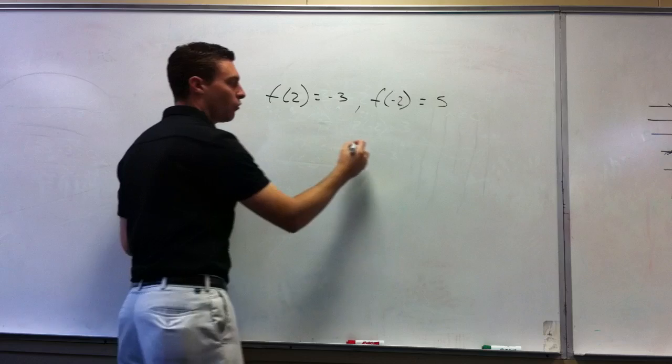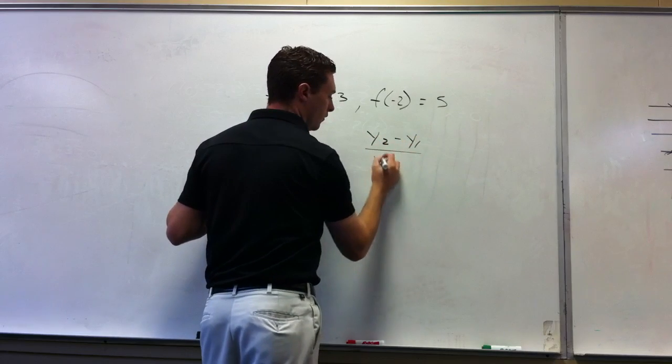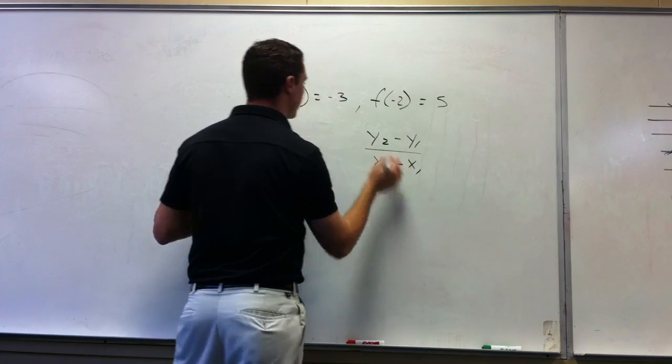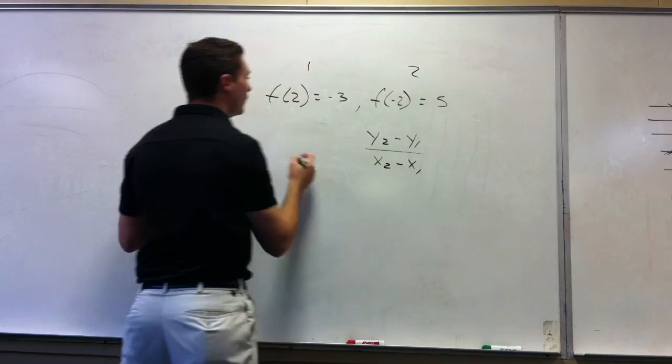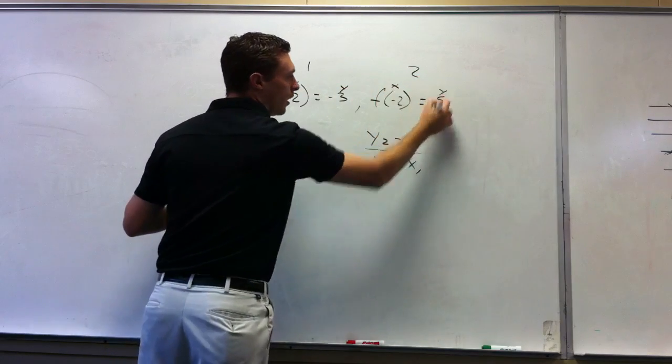So we're going to do slope formula: y2 minus y1 over x2 minus x1. This is point 1. This is point 2. So if this is x and y and x and y, what would y2 be?